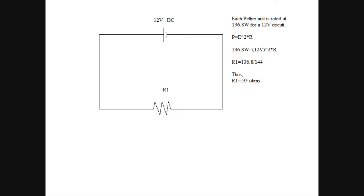That resistor is the Peltier unit that I'm going to be using. When I bought it on eBay, it said it was rated at 136.8 watts for a 12 volt circuit. Doing the calculations, I figured out what the resistance of this unit would be. It's about .95 ohms, if everything's correct. I haven't actually tested it, but let's just run with a theory right now based on this assumption.